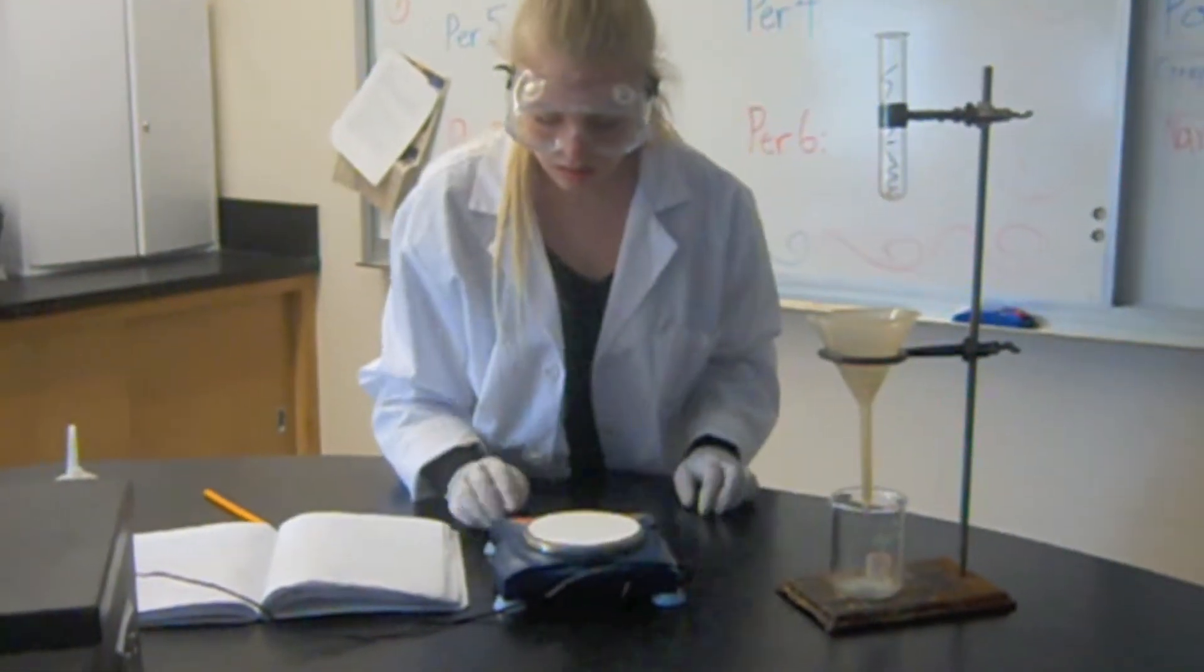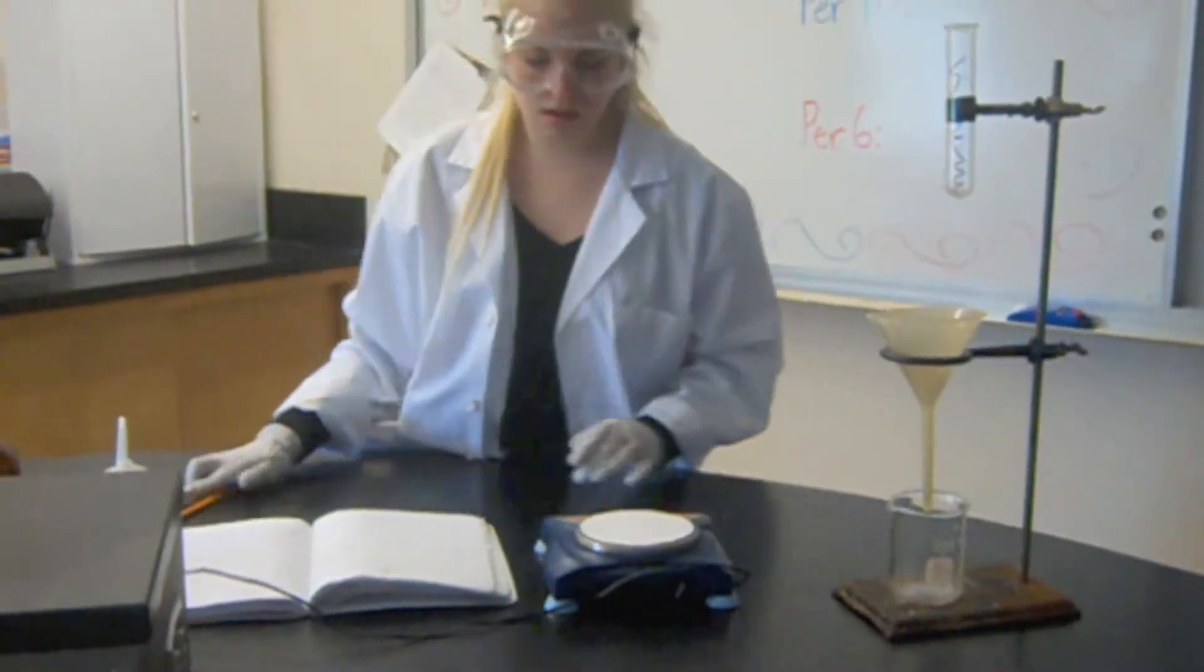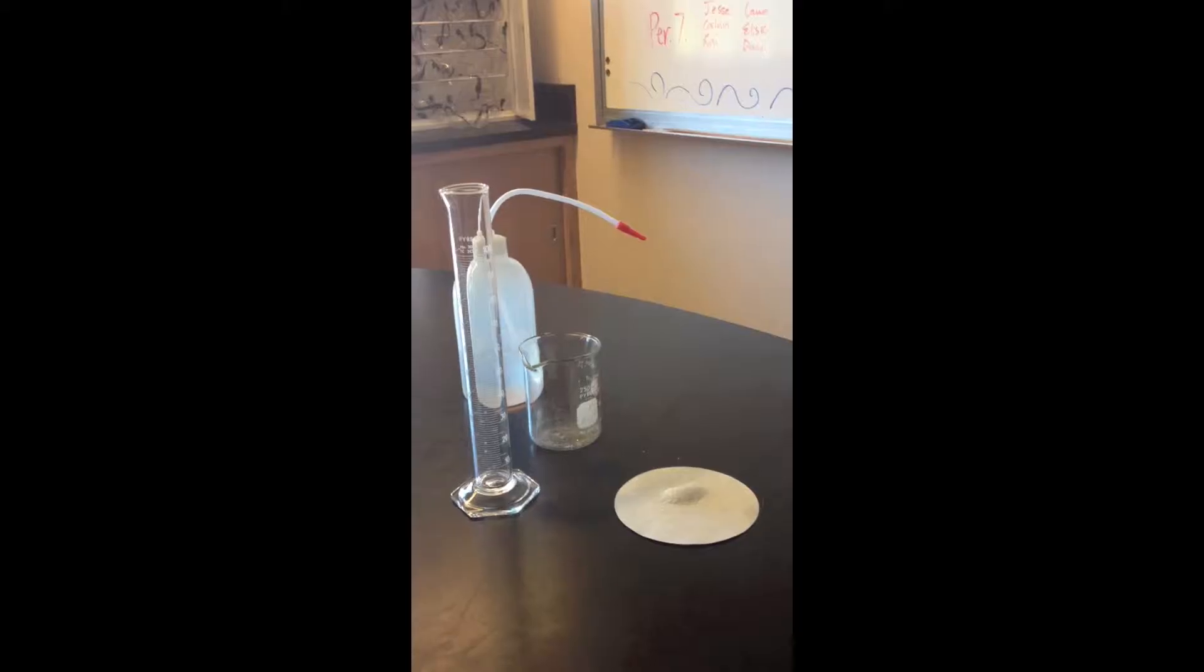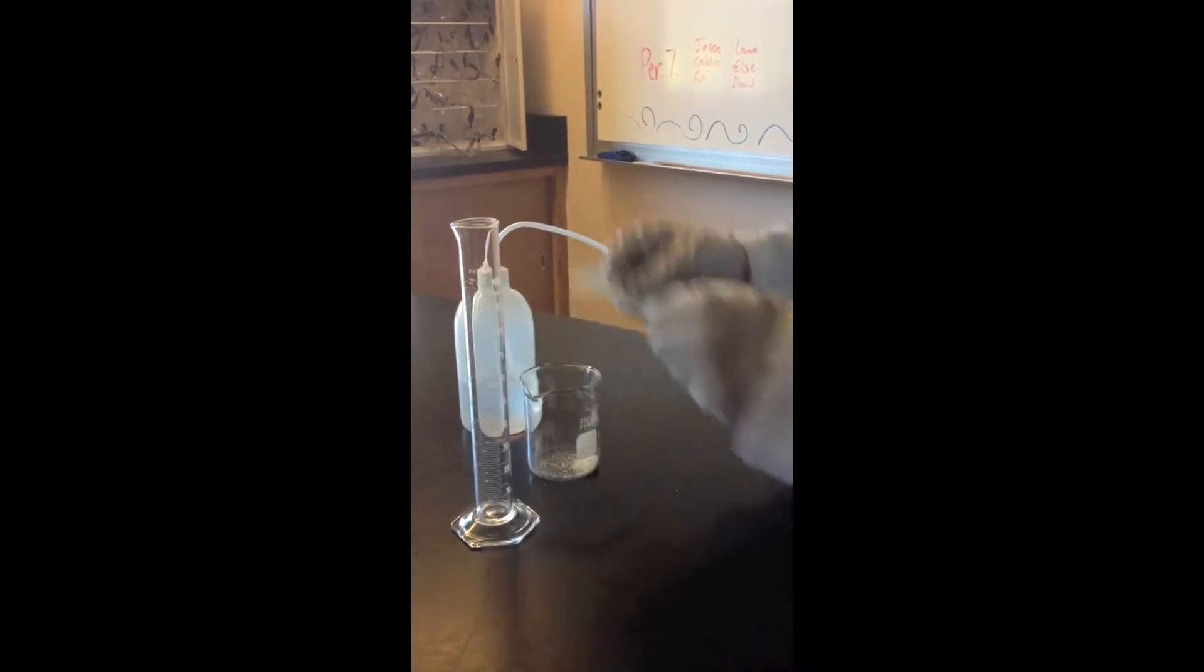Weigh a clean sheet of filter paper. Collect about 1.5 grams of Silver Nitrate on the filter paper. Pour the Silver Nitrate into the beaker.